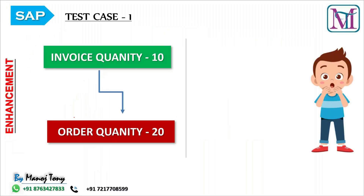For test case one, we need to create one invoice with 10 quantities. Then we create a return order with reference to that invoice and change the return sales order quantity from 10 to 20. First we have to cross-check whether the system will allow it or not.